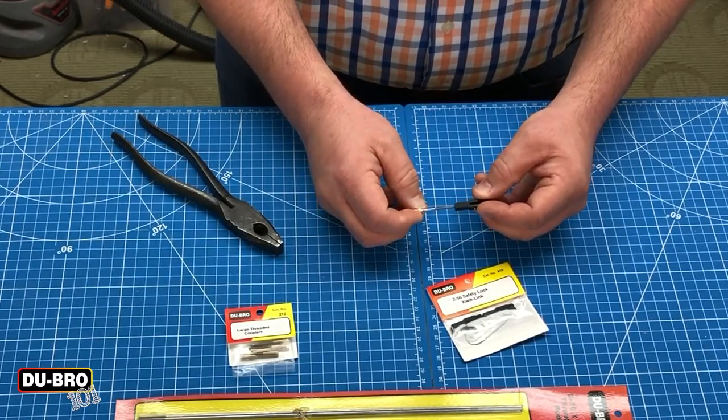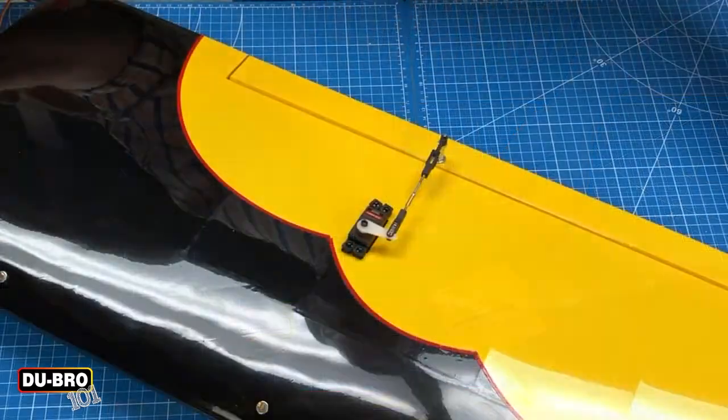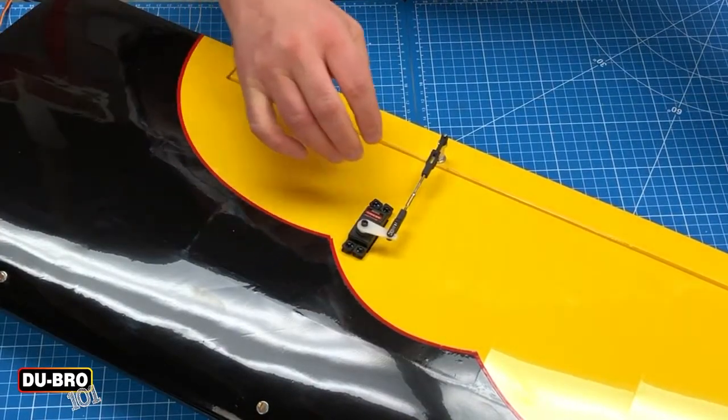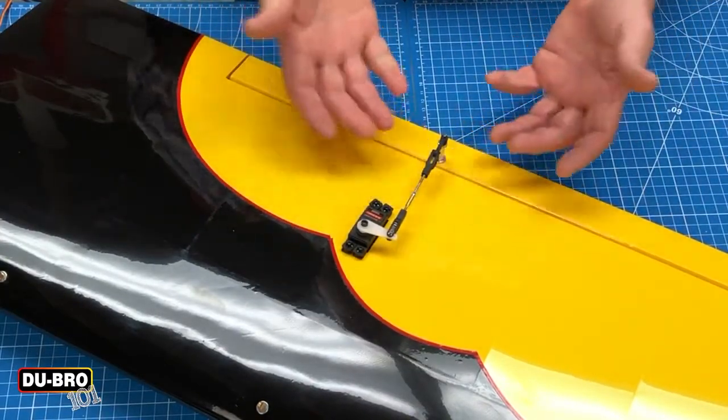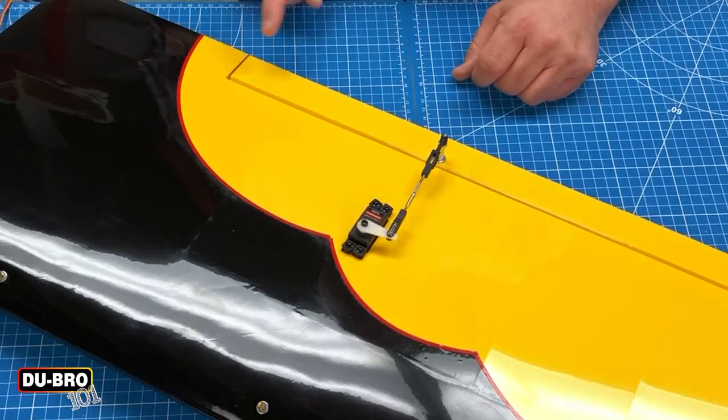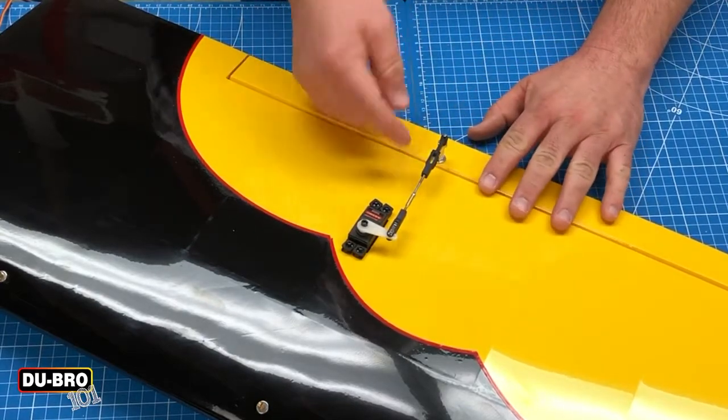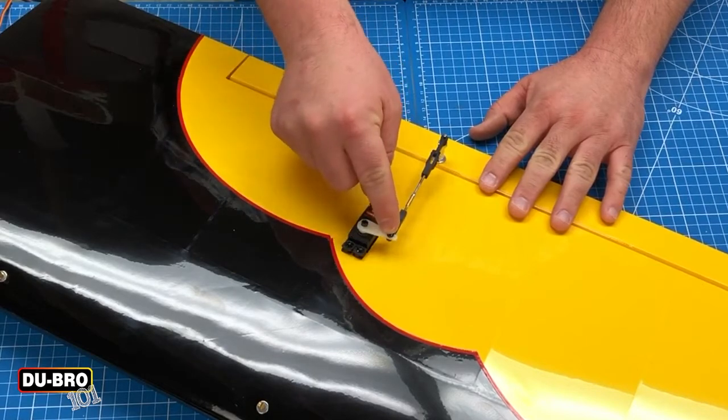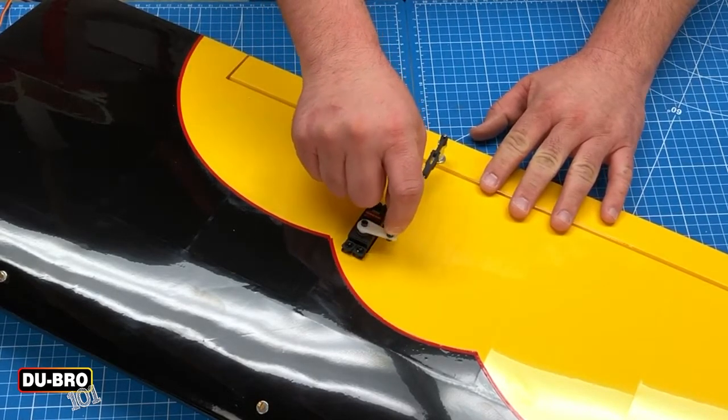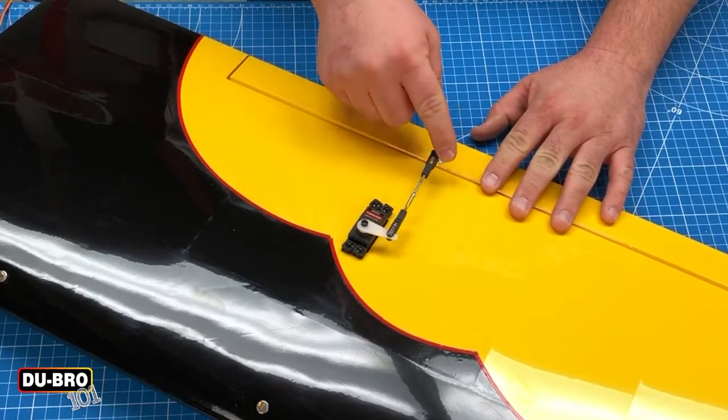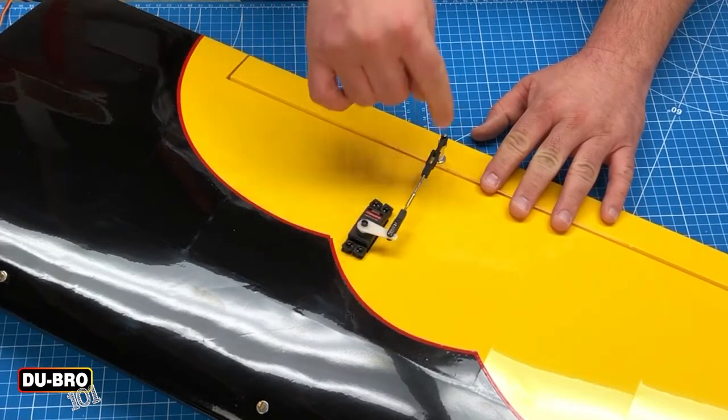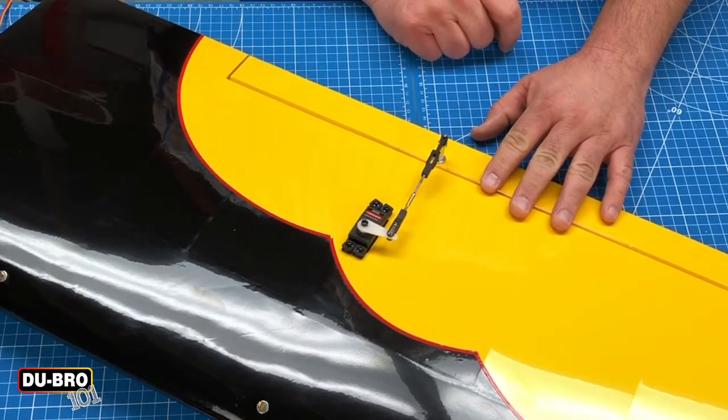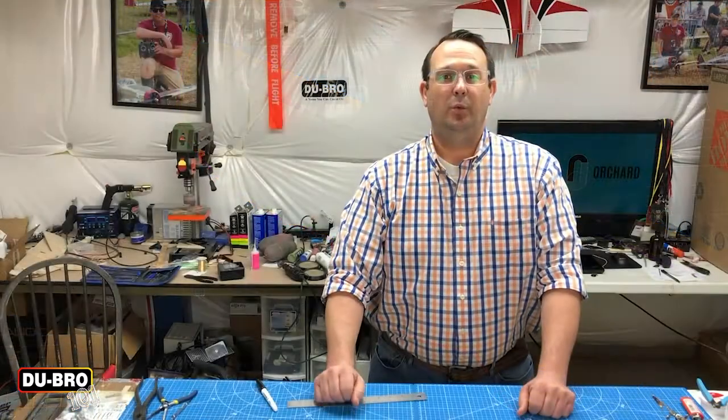So to finish this demonstration out, I just wanted to show you guys what the fully assembled part looks like. I've got my control surface centered, and you can see the rod that we have made here with a quick link connector with a safety lock on each end, and it's on the servo arm as well as the control horn that we've installed previously.